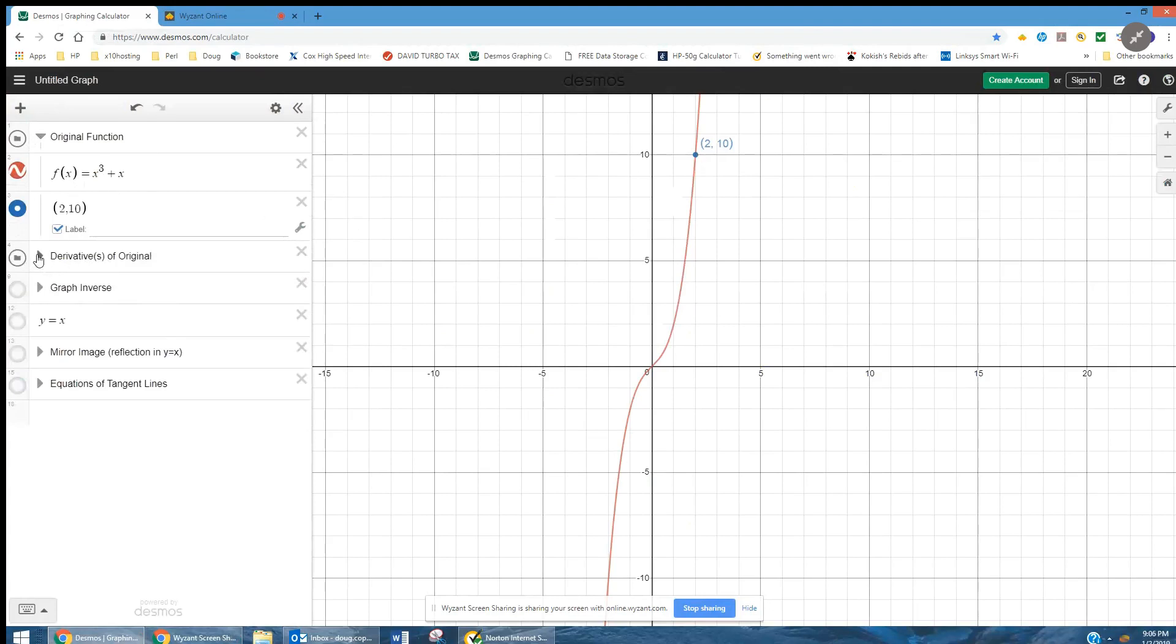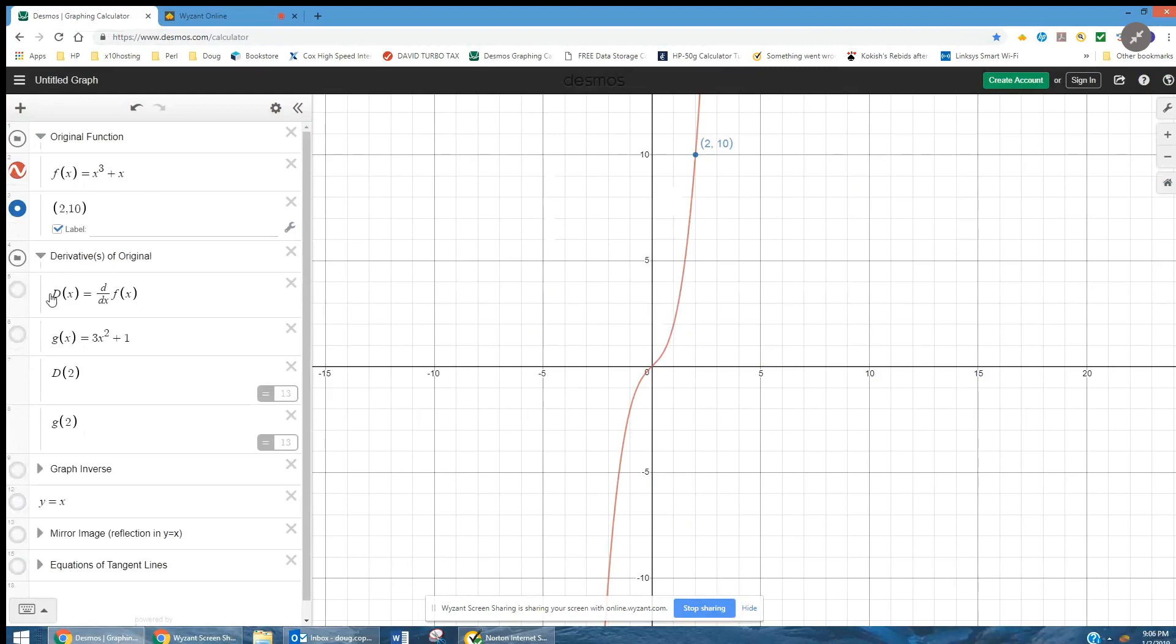Here are the derivatives of the original function. I could use the Desmos function to get the derivative, or I can actually take the derivative of f and call it g, 3x squared plus 1. And d of 2 gives us a 13, g of 2 gives us a 13.